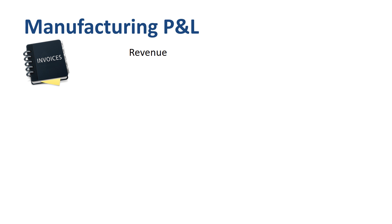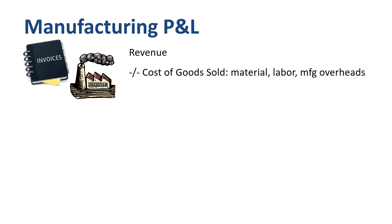The top line of an Income Statement is revenue — the sum of the invoices sent to customers for the goods that you have delivered or the services that you have rendered, assuming that all invoices meet revenue recognition criteria. Manufacturing costs like material, labor, and manufacturing overheads eventually end up in the P&L as cost of goods sold. Revenue minus cost of goods sold is Gross Margin.